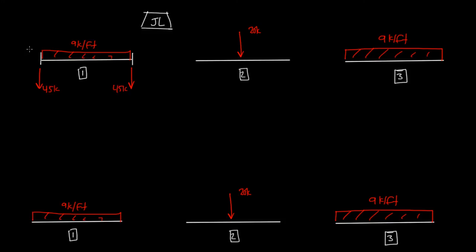The moment is going to be in the direction of the bending — this is what causes the bending. If you calculate the fixed end moments for both of these, you'll get 75 kip-foot on the left and 75 kip-foot on the right.